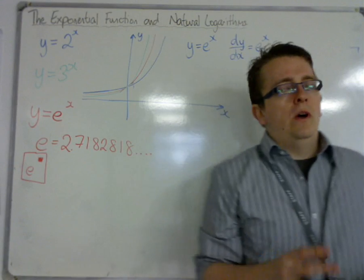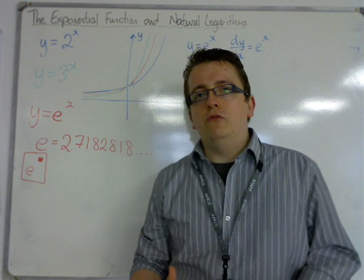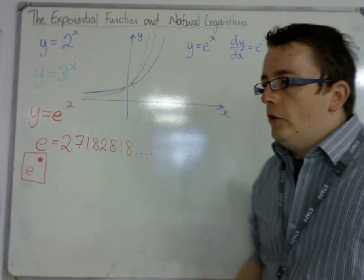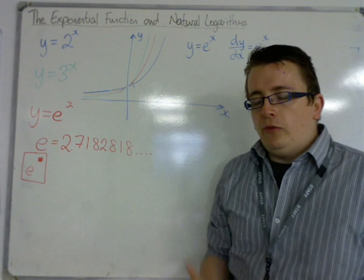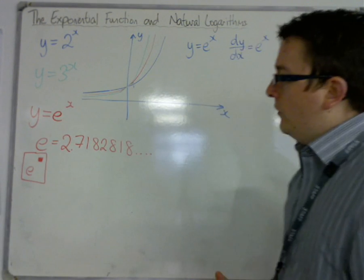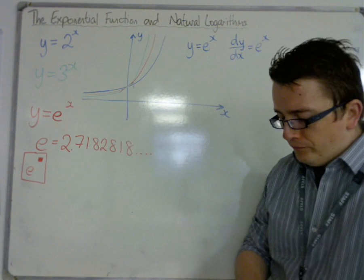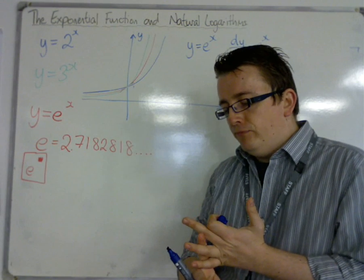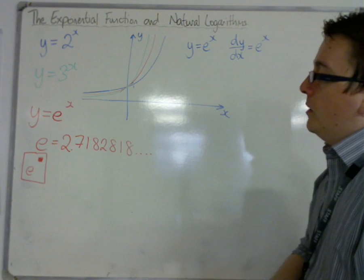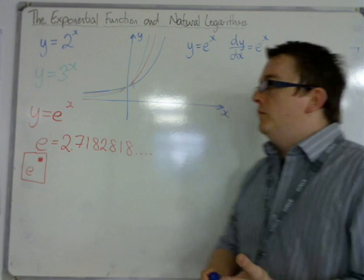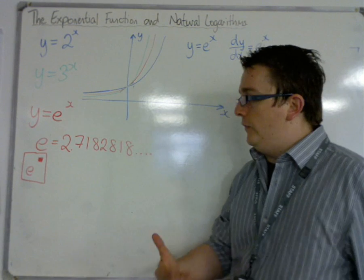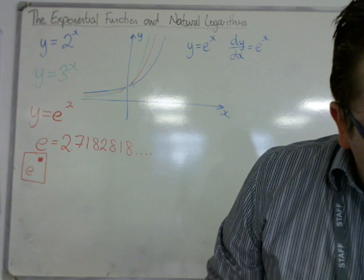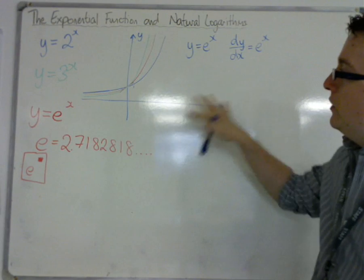e comes up in many different parts of mathematics and in nature. It's one of those special numbers that keeps coming up all over the place. It especially appears in biology and chemistry for radioactive decay, and in finance with compound interest, among many other uses.